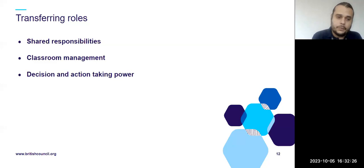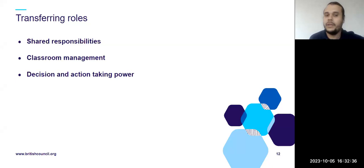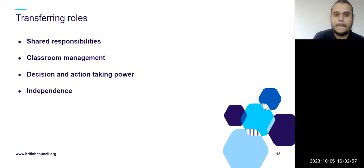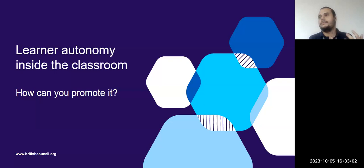We give students decision power. We have the institutional syllabus, but we also have their needs and interests. If as a whole they think something is useless, we ask: how can we adapt it? How can we make it useful? If not, what can we do instead? That's how they achieve independence. So the theory sounds beautiful and perfect, but how can we promote it inside the classroom? Please type some ideas in the chat.